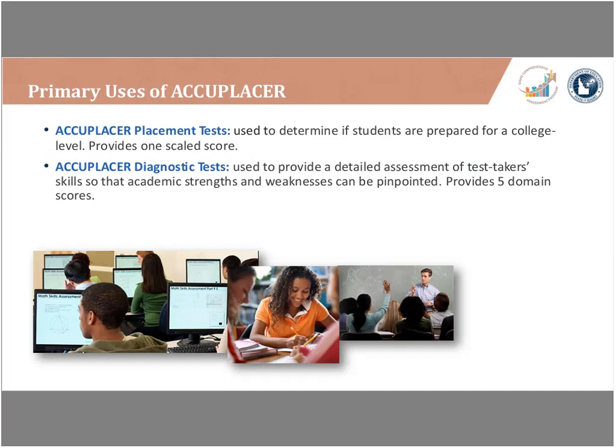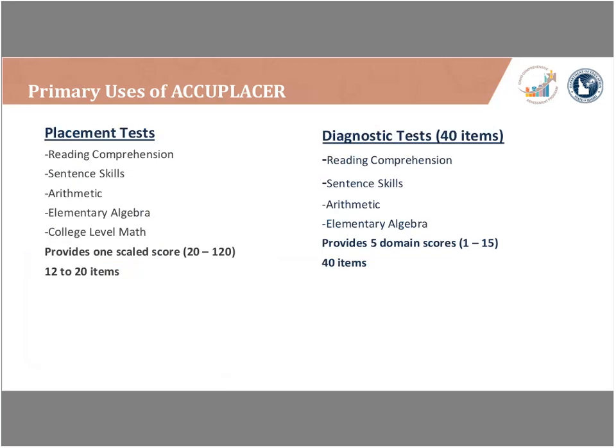Melanie and Danielle will get into how you'll use these specifically in Idaho. The placement exam gives one single score on a range of 20 to 120. The diagnostics give five separate scores on a different scale of 1 to 15. This was very intentional — if you see a score in the 20 to 120 range, you're dealing with a placement exam; in the 1 to 15 range, it's the diagnostic. The placement test covers reading comprehension, writing (called sentence skills), and three math sections: arithmetic, elementary algebra, and college-level math.